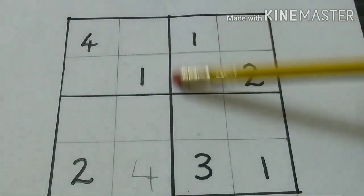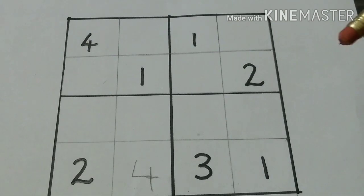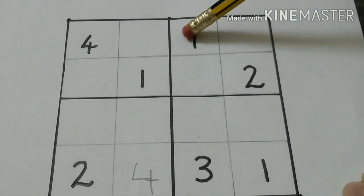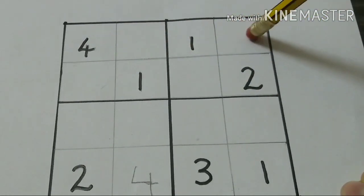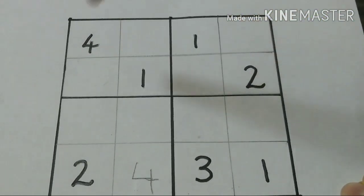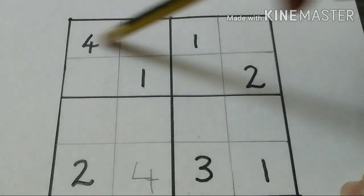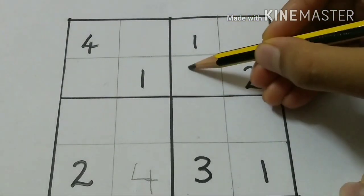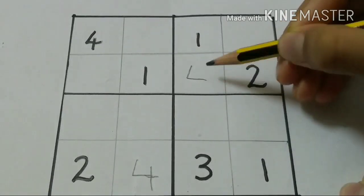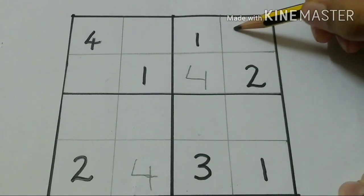Now let's take this box. There is 2 and 1. 4 won't come here because there is already a 4 in this row. So we have to write 4 over here, and 3 will come here.